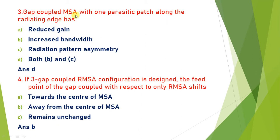A gap coupled MSA with one parasitic patch along the radiating edge generally has increased bandwidth as well as radiation pattern asymmetry. Both B and C are correct, so the answer is D — all of the above.